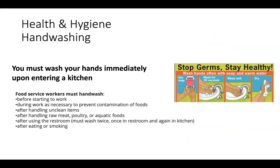Hand washing. Improper hand washing is known to be the number one cause of foodborne illness in Washington State. You must wash your hands immediately upon entering your kitchen. You must also wash hands before starting to work, during work and as necessary to prevent contamination of foods, after handling unclean items, after handling raw meat, poultry, or aquatic foods. After using the restroom, you must wash twice — once in the restroom and again when returning to the kitchen. After eating or smoking.